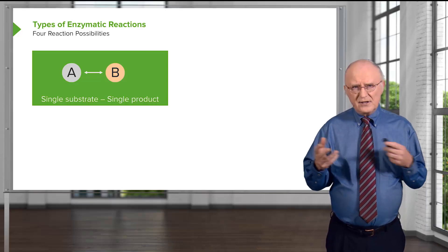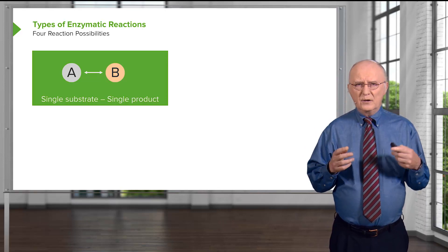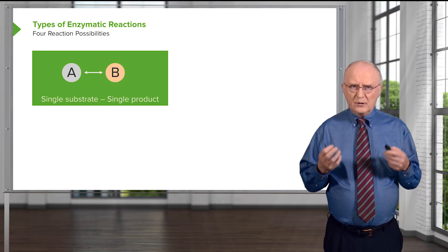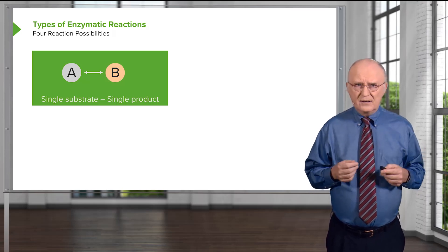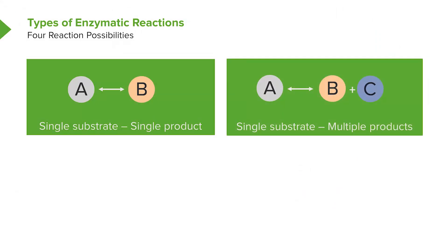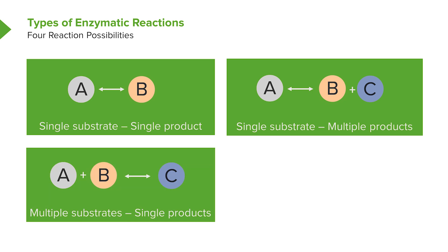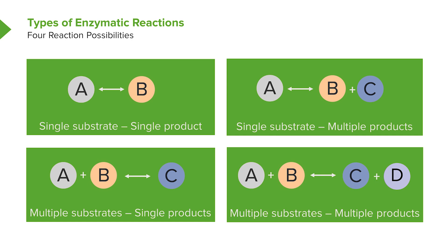When we think about enzymatic reactions, there's a series of different ways that molecules can react in interacting with an enzyme. We can have a single substrate reaction and a single product — A is converted into B. We can have a single substrate converted into multiple products: A is split into B and C. We could take multiple substrates and make a single product, putting two things together to make a third. And last, we could have multiple substrates and multiple products, where A and B are converted into C and D.